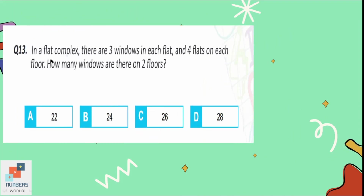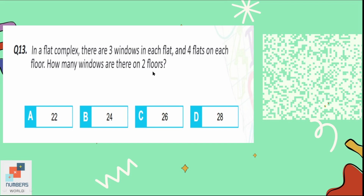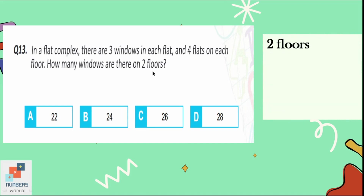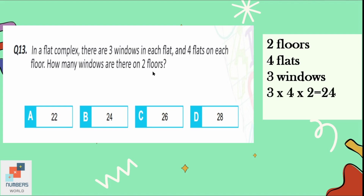Question number 13: in a flat complex there are three windows in each flat and four flats on each floor. How many windows are there on two floors? Multiplying: 3 windows × 4 flats × 2 floors: 3 × 4 = 12, and 12 × 2 = 24. Option B is correct. There are 24 windows in the flat complex.